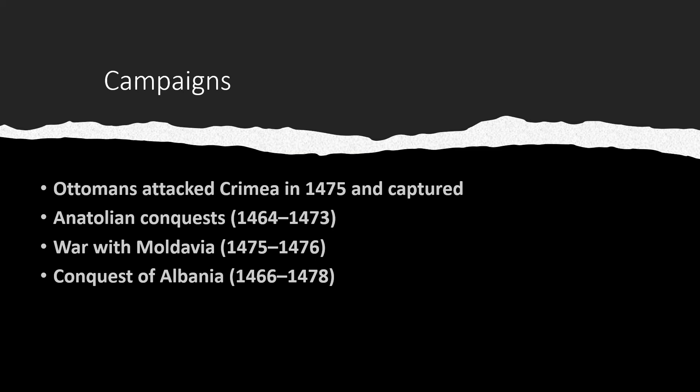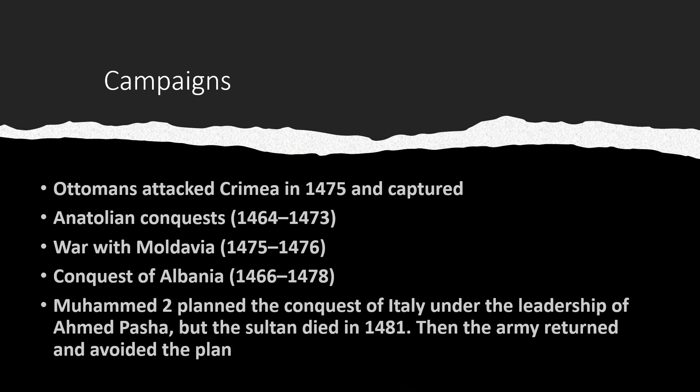In summary, Muhammad al-Fatih wanted to conquer the world, trying his best to conquer all major dynasties and kingdoms in Europe, Asia, and Africa. He was planning to attack and capture Italy, and sent an army under the leadership of Ahmed Pasha. However, Muhammad II died in 1481 before the army reached Italy, and the army returned upon hearing the news of his death, abandoning the plan to attack Italy.